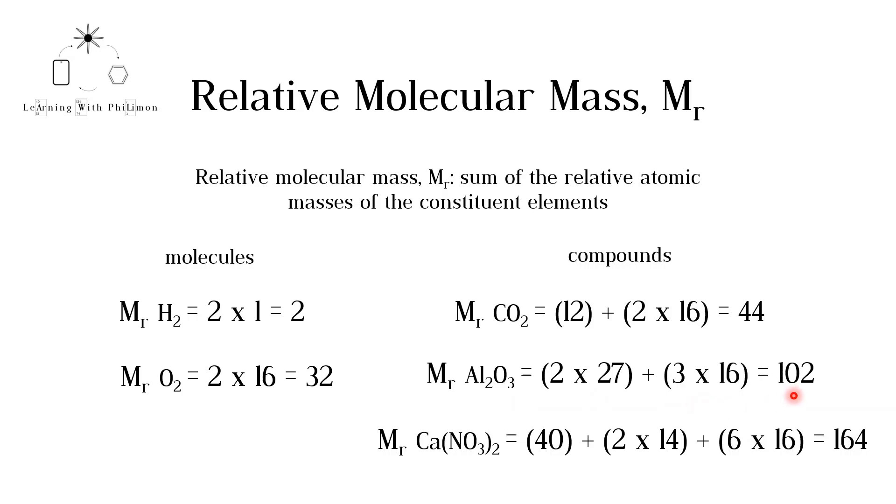In this last example, we have calcium nitrate, Ca(NO3)2. Note that whenever you have parentheses, the subscripts of the elements within are multiplied by the subscript outside the parentheses.